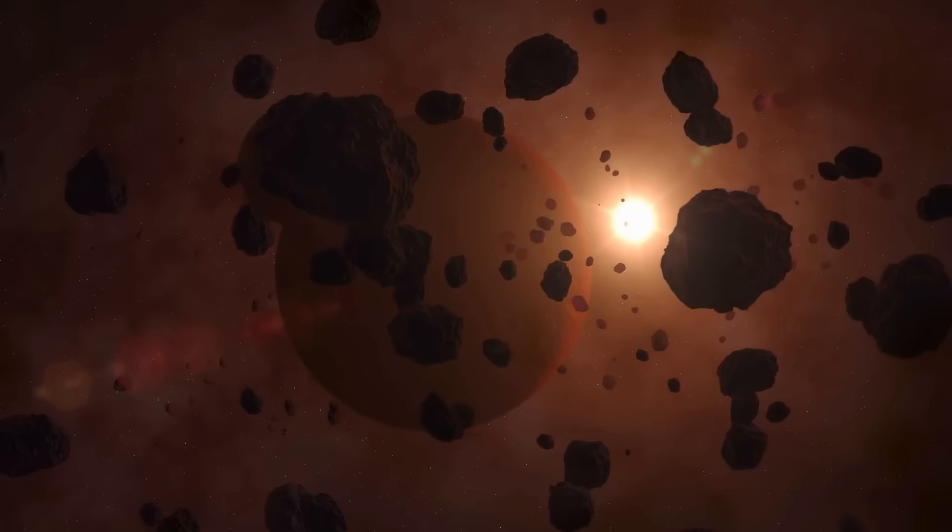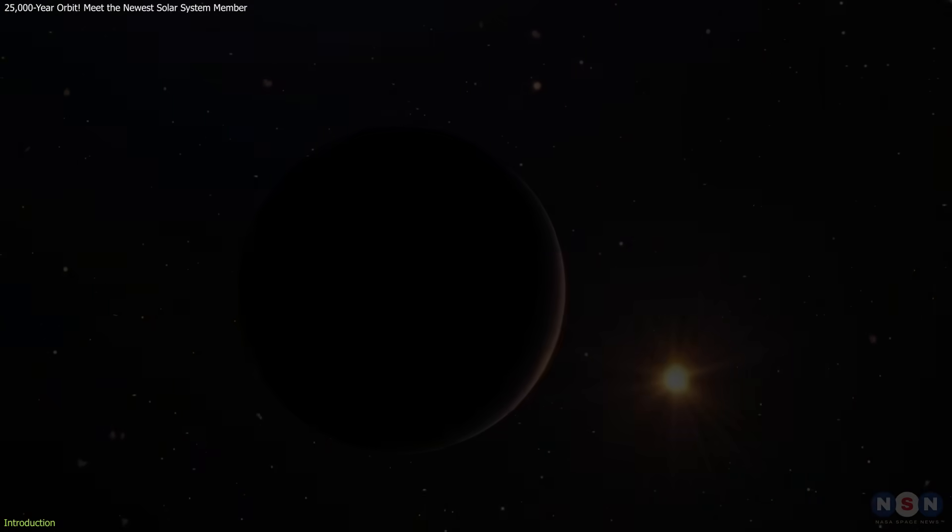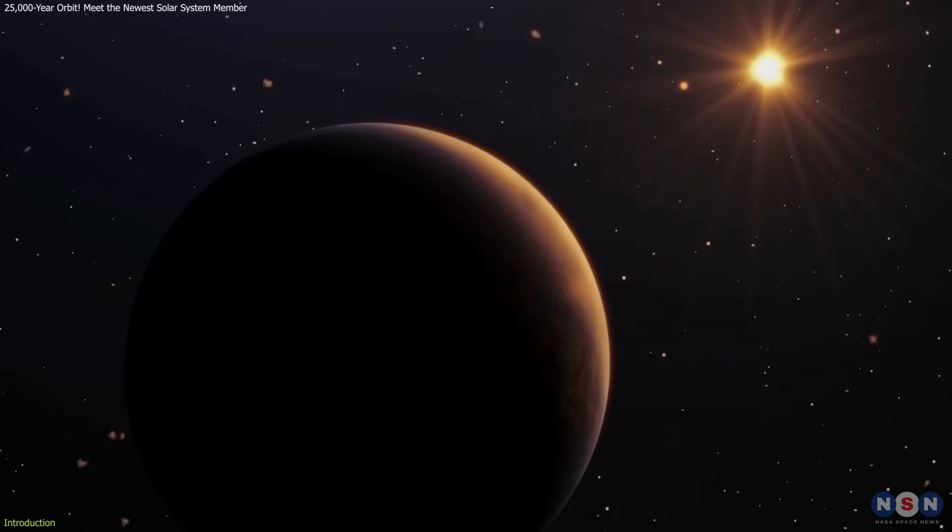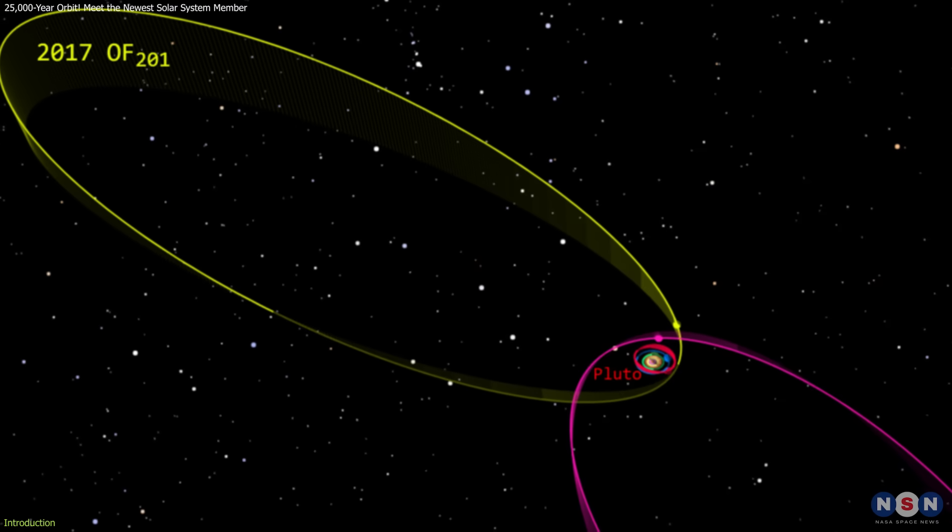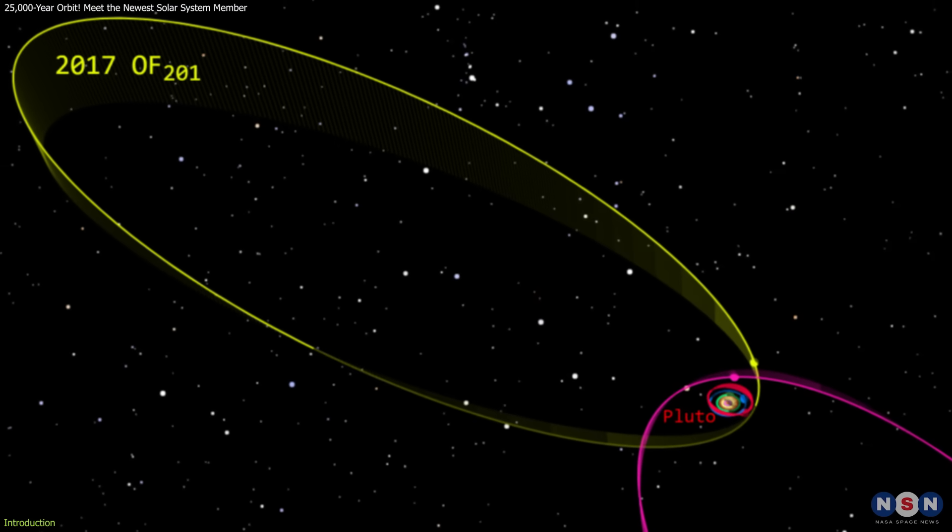Imagine discovering a new world in our solar system, a celestial body so distant and elusive that it takes 25,000 years to complete a single orbit around the sun. This isn't science fiction, it's the reality of 2017 OF-201.